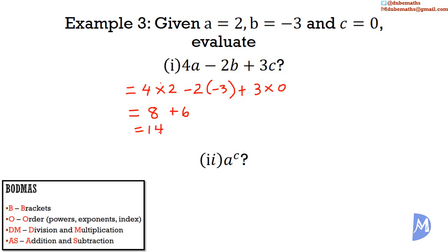And part 2: a to the cth power. We have a being 2 and c is equal to 0. In the laws of powers, we learn that any number to the 0th power is equal to 1.